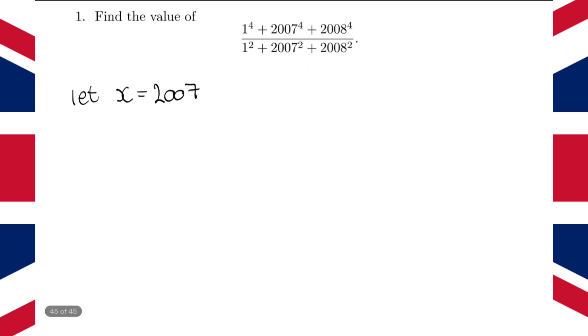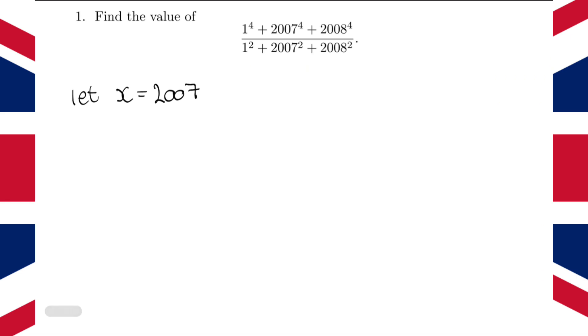So what we can do is we can rewrite our expression here. We can write it as 1 to the power 4, which is of course just 1, plus 2007 to the power 4 is just going to be x to the power 4 now. 2008 to the power 4, that's just going to be x plus 1 to the power 4 now. And, same on the bottom, 1 squared is 1, 2007 squared is now going to be x squared, 2008 squared is now going to be x plus 1 squared.